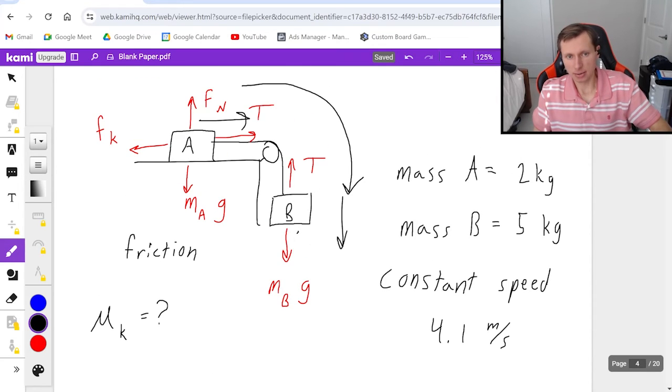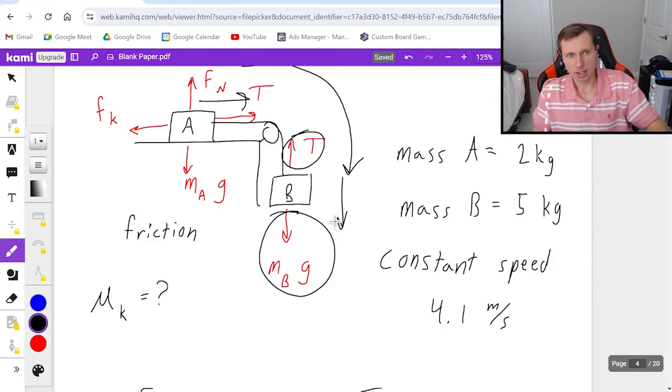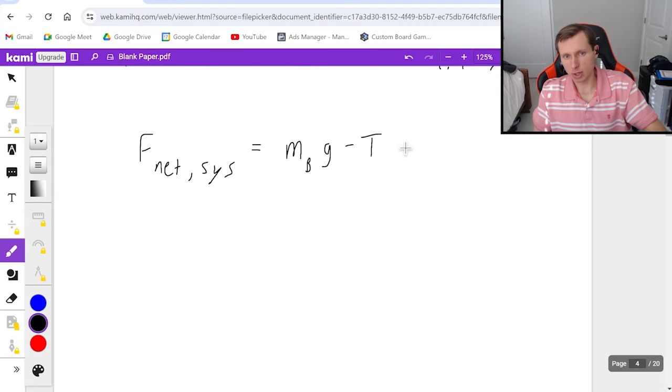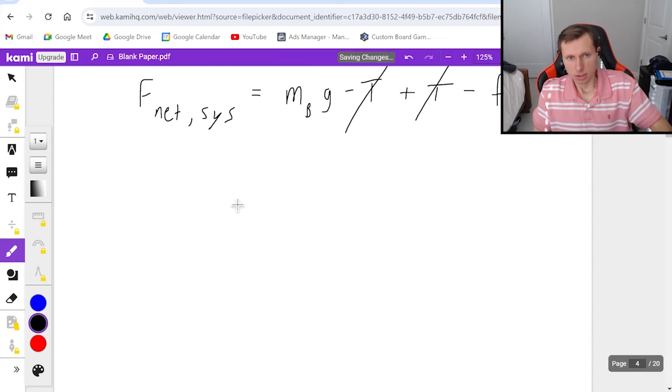So using that coordinate system, which I like to call F_net_sys for system. So looking back at my diagram, I would say m_B*g is positive and this T is negative based on that reasoning. So m_B*g minus T. And then scrolling up, this T is positive because it points to the right. And this f_k is negative because it points to the left. And F_N and m_A*g are zero for this equation because they're not pointing left or right. They're not contributing to the motion. So then that means back to this equation, we said plus T and minus f_k. And we noticed that the T's are going to cancel out, which is great.